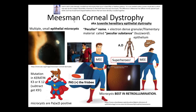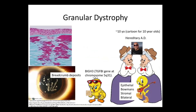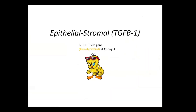You don't want to confuse Meesman with Lisch epithelial corneal dystrophy — they both have microcysts, but with Lisch epithelial corneal dystrophy it's a band or feathery lesion. I think of Lisch as Victoria's Secret because of those feathery lesions. That finishes the epithelial corneal dystrophies.